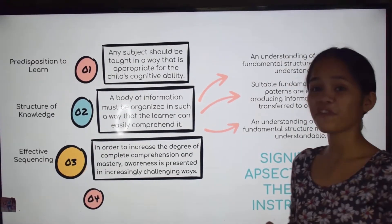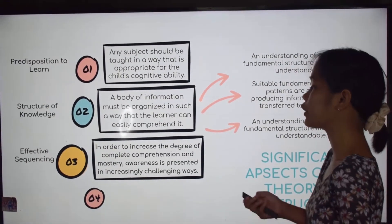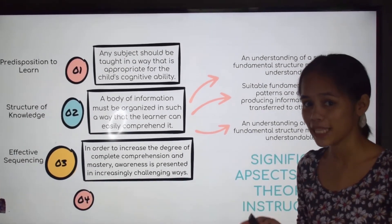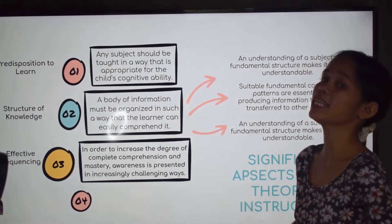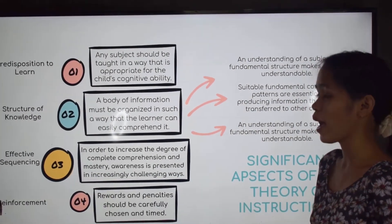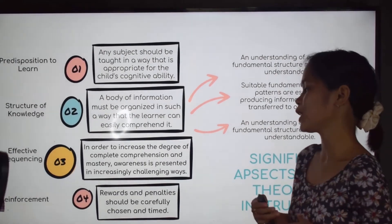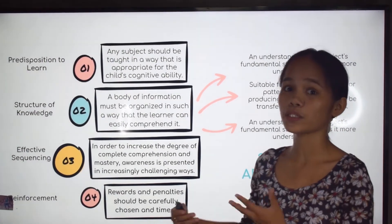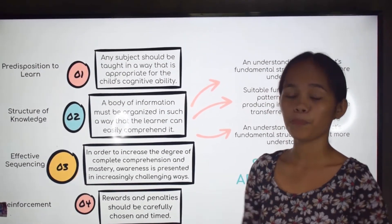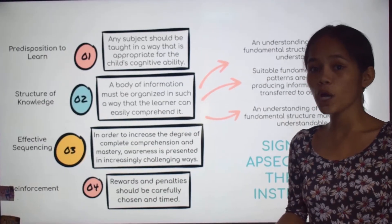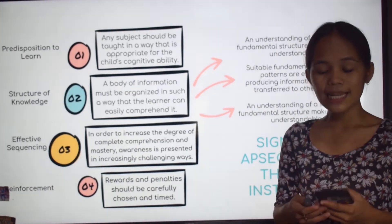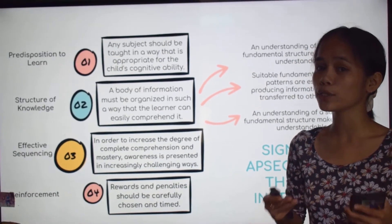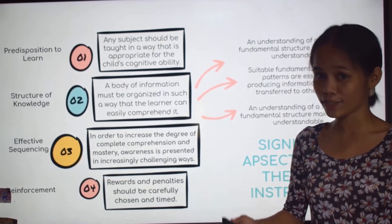Third, we have effective sequencing — in order to increase the degree of comprehension and mastery, awareness is presented in increasingly challenging ways. And we also have reinforcement — rewards and penalties should be carefully chosen in time. Perception, conceptualization, learning, decision making, and inference making, according to Bruner, all require categorization.